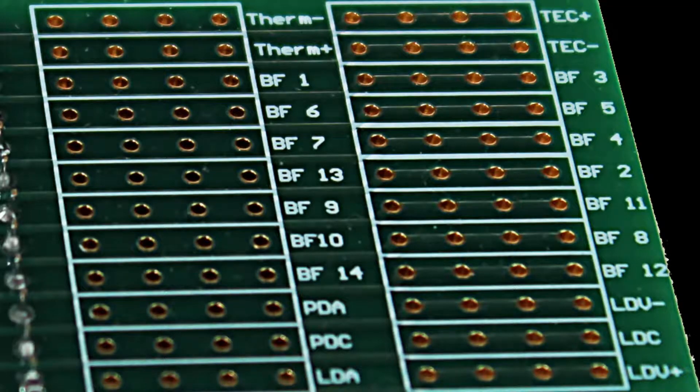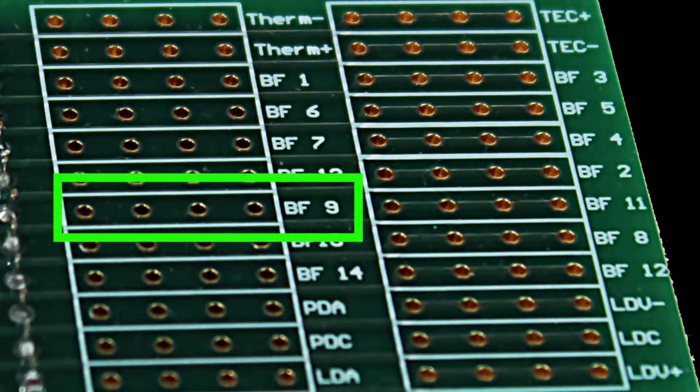In order to use the custom butterfly card, the connections seen on the pinout schematic must be made on the card. On the card, each labeled connection point has four available vias. These vias are electrically common, and any of them can be used with the same result.